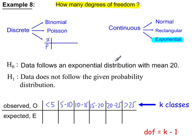Example 8 (exponential): we're testing whether the data follows an exponential distribution with a given mean. You can either state the mean directly, or say lambda equals 1 over 20. There are k minus 1 degrees of freedom, giving 5 degrees of freedom.